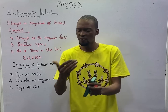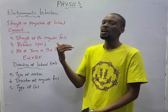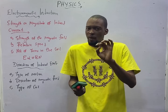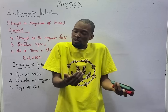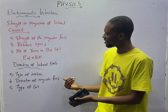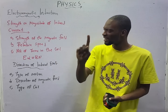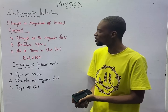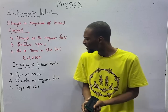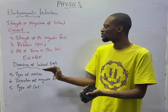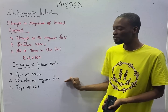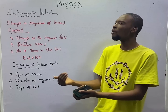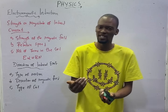EMF is only induced when there is relative motion between the conductor and the magnetic field. The strength or magnitude of the induced current depends on the strength of the magnet, the relative speed, and the number of turns in the coil. The direction of the induced current depends on the type of motion producing the current, the direction of the magnetic field, and the type of coil — whether solenoid or other types.